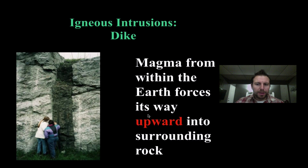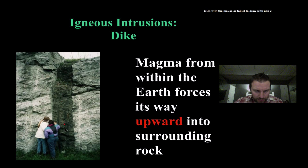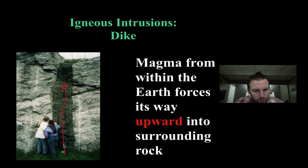Igneous intrusions are basically when magma or lava is pushed up through different types of rocks that make up the surface. When it does that, sometimes it cools and what we get is called igneous intrusions. This magma is forced up and through, and what ends up happening is it cools, hardens, and solidifies.